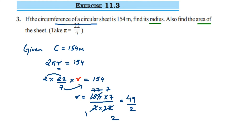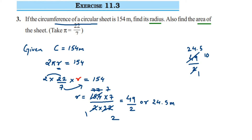We can write r = 49/2 or convert it to a decimal. Dividing 49 by 2: 2 × 24 = 48, remainder 1, bringing down 0 gives 10, and 2 × 5 = 10. So the radius is 24.5 meters. That completes the first part of the question — finding the radius.